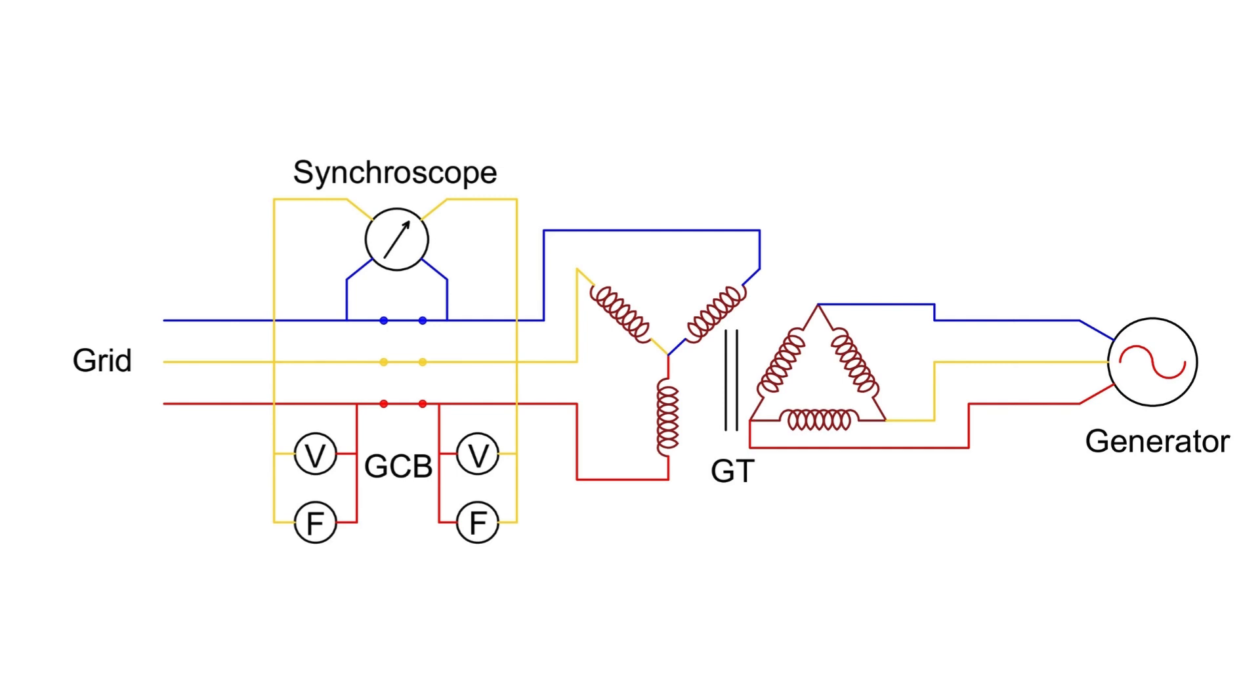Once synchronized, the voltmeter and frequency meter readings on both sides will match, but the generator won't supply or absorb power. This is known as the floating condition.